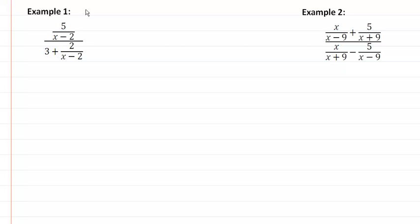In example one, our LCD - we have a denominator of x minus 2, and the LCD is just going to be x minus 2.